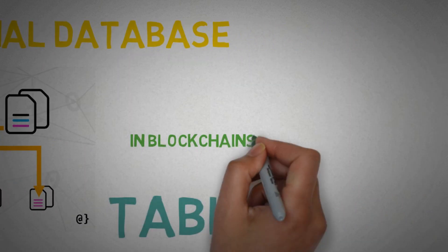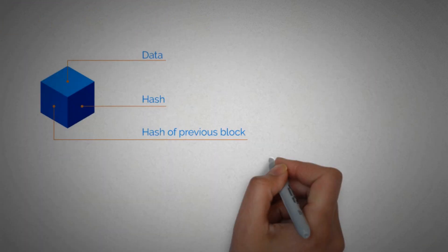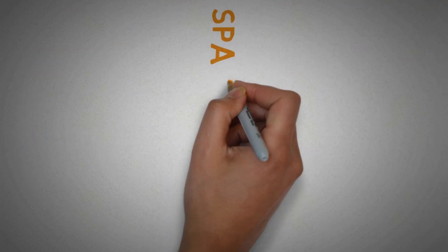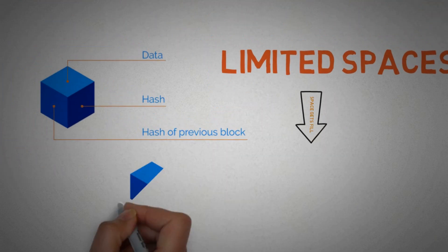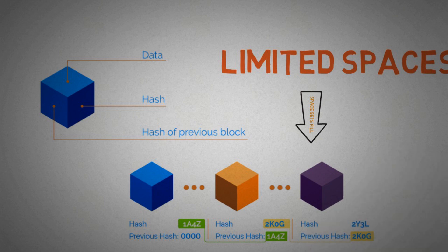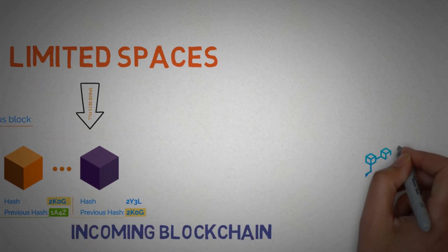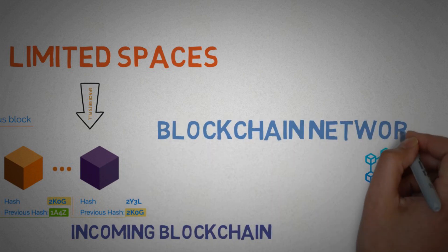These blocks inside the blockchain network have certain spaces where data is stored. When the space inside a block gets filled, the block gets closed and gets attached to the previous block on the incoming blockchain — hence it forms a blockchain network.